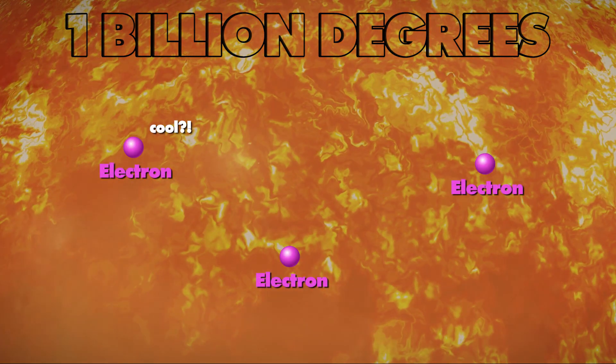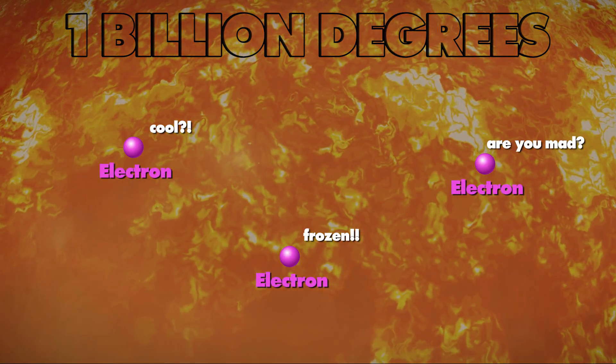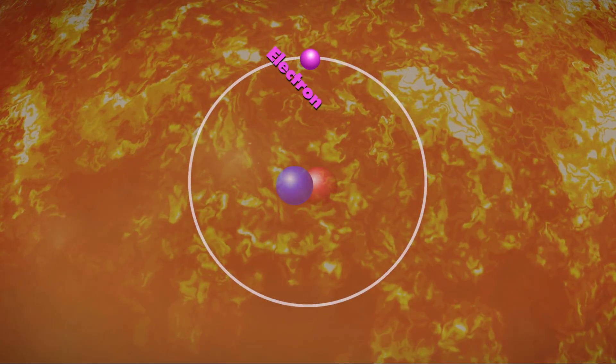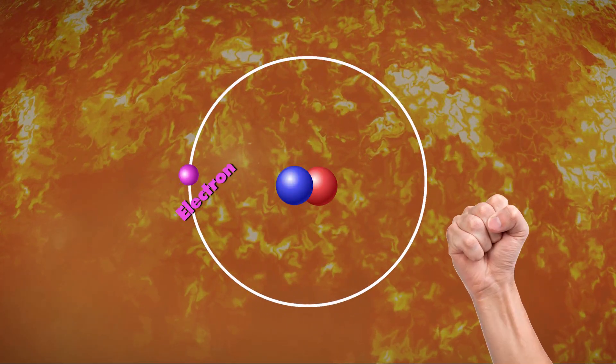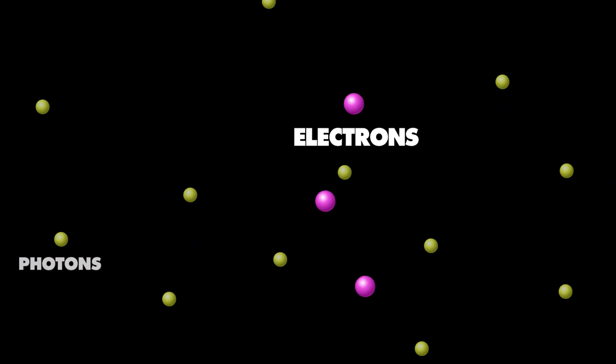To become proper atoms nuclei need electrons. But although it's cool enough for the electrons to have frozen into existence, they are still far too high energy to get tied down by the nuclei, the non-committal bastards, so they roam free among the photons.